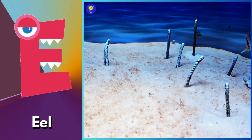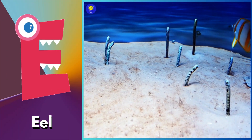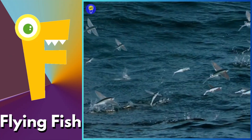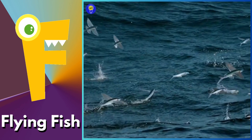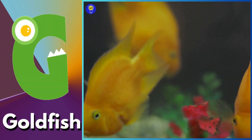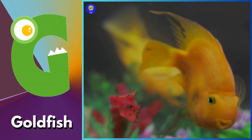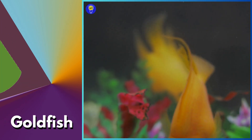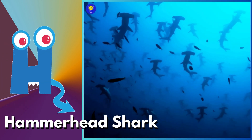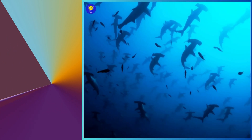E is for eel, eh, eh, eel. F is for flying fish, fuh, fuh, flying fish. G is for goldfish, guh, guh, goldfish. H is for hammerhead shark, ha, ha, hammerhead shark.